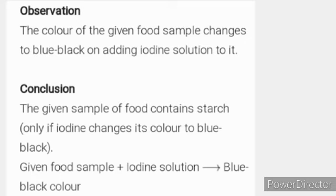Now we are continuing with our answer. Next heading is observation. The color of the given food sample changes to blue-black on adding iodine solution to it. And what is the conclusion or inference? What do we conclude from this test? Or what you have learned from the test? The given sample of food contains starch, only if iodine changes its color to blue-black. Given food sample plus iodine solution indicates blue-black color means the food sample shows the presence of starch. Our answer number B is complete. We have to write this answer also and we have to draw the diagram also which I have given you in this answer. Draw the diagram on the left-hand side of your notebook and you have to write on the right-hand side of your notebook.